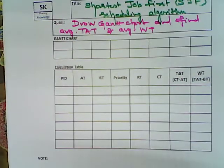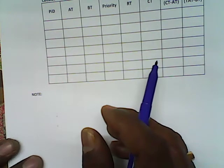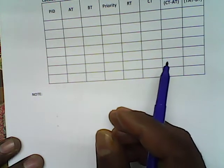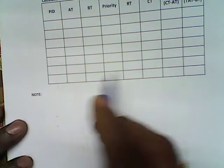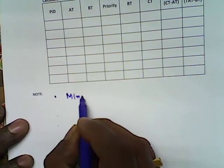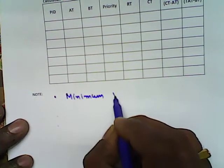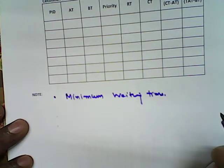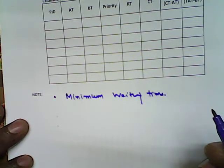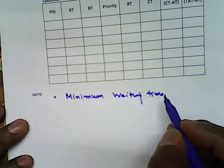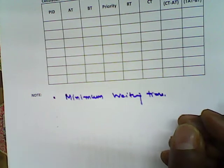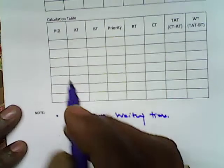The question normally asks like this: Draw a Gantt chart and find average turnaround time and average waiting time using SJF for a process that is being defined in the PID, AT and BT. Let us discuss about this particular algorithm in brief.